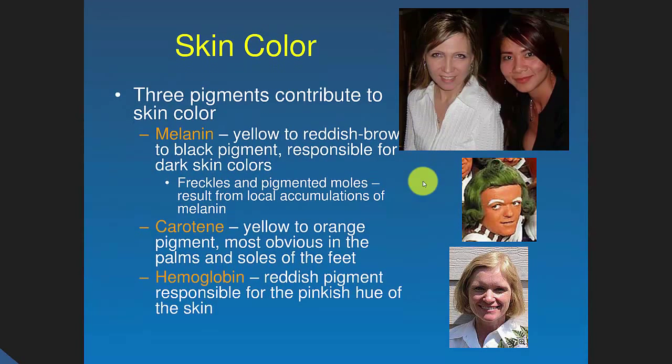Skin color comes mainly from three different pigments. Melanin gives a yellowish to brownish color — freckles and pigmented moles are also made of melanin. Carotene: if you eat a lot of carrots, you really will turn orange because of carotene. And hemoglobin gives us a reddish pigment.